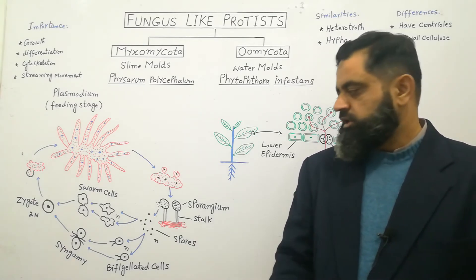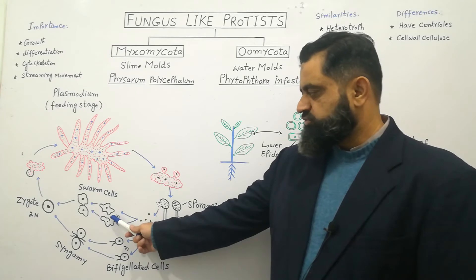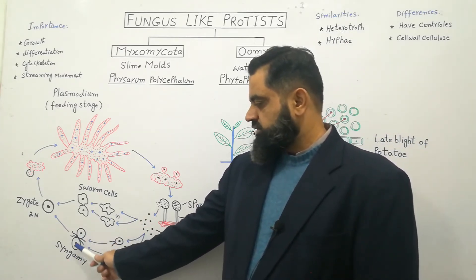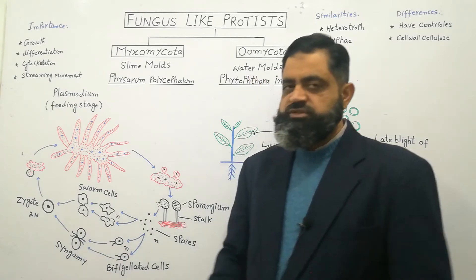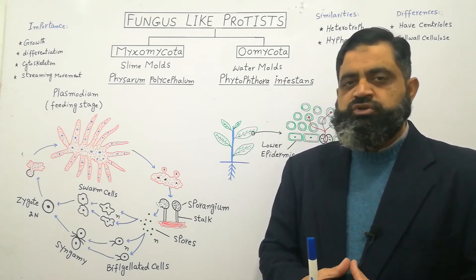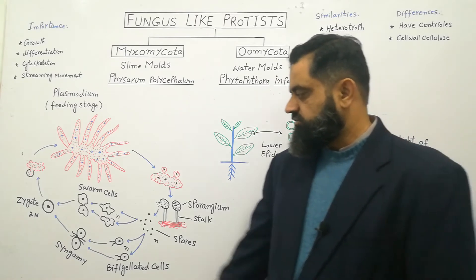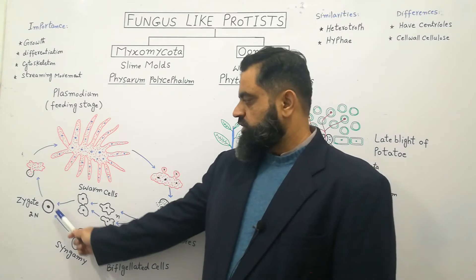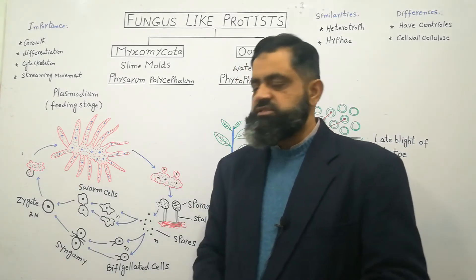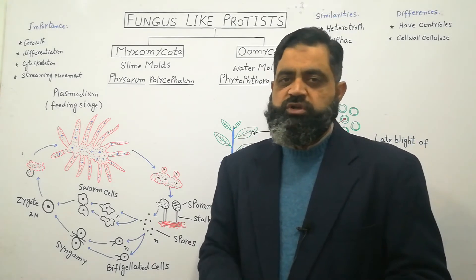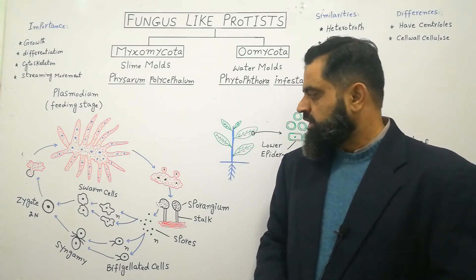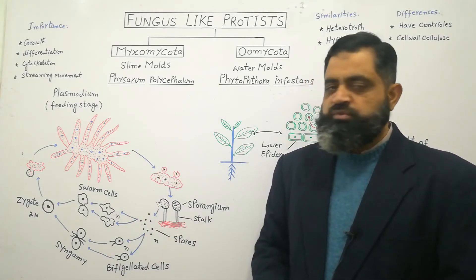Later on, these biflagellated or amoeboid cells fuse with each other in a process known as syngamy — 'syn' meaning union, 'gamy' meaning gametes — just like a union of male and female gametes. After syngamy, these cells develop into a diploid zygote. This zygote then divides mitotically to develop into a new plasmodium, the new plant body of Physarum polycephalum. This completes the life cycle of Myxomycota.